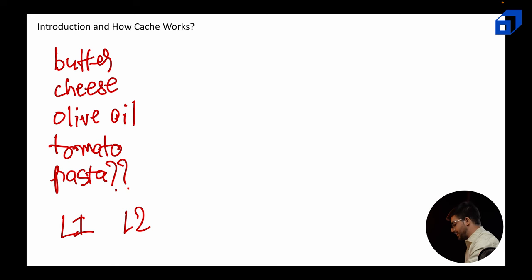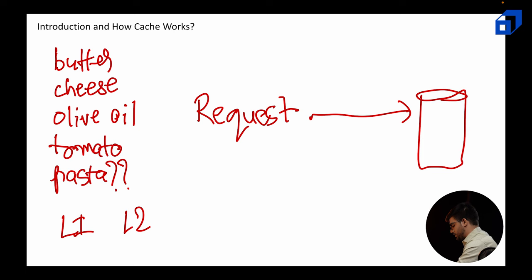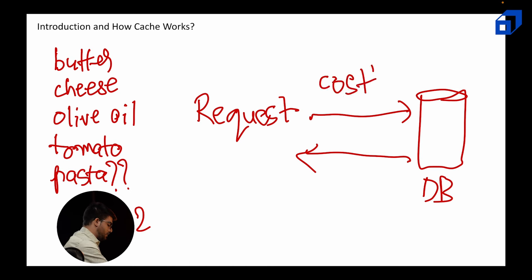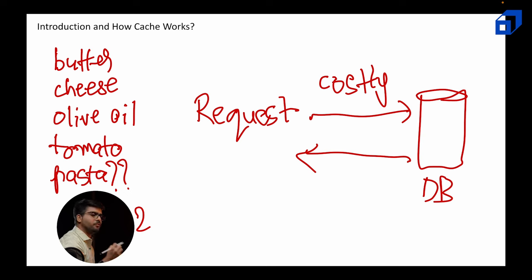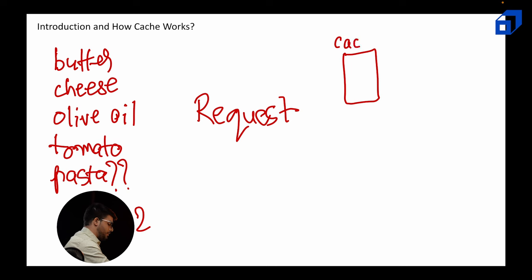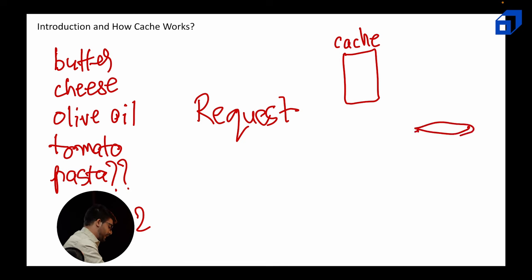Let's say you get some request. It tries to fetch from the database. When the request comes, it asks something from the database and the information is returned to the user. But this is a costly operation — going to the grocery store is quite costly, you need to spend time and burn calories. So we want to minimize those costly operations. Instead of fetching directly from the database, we put a caching system in between. Let's forget about L1 and L2 for right now — this is our cache and this is our database.